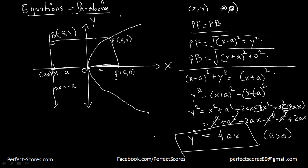Expanding: y² = x² + a² + 2ax - x² - a² + 2ax. The x² and a² terms cancel, giving y² = 4ax, where a > 0. So this is the first standard equation of a parabola — for a parabola passing through the origin with focus at (a, 0), y² = 4ax.